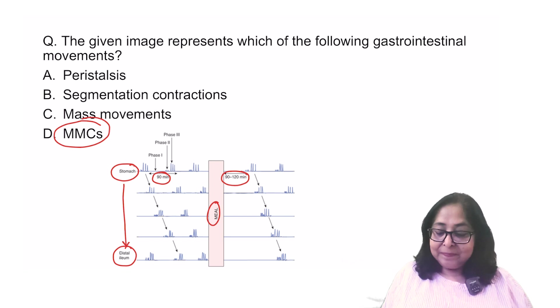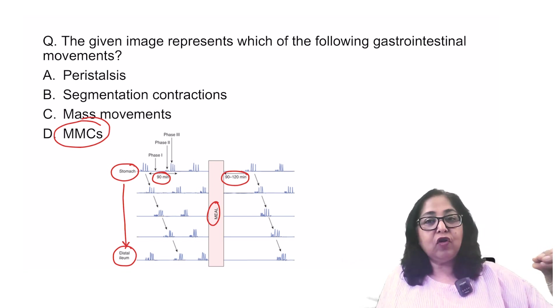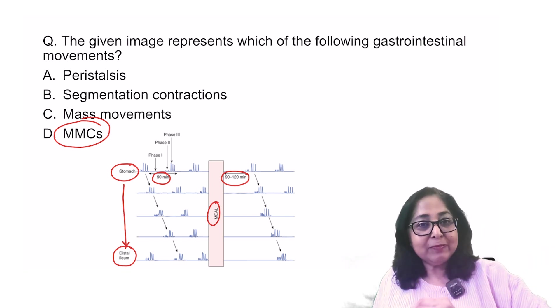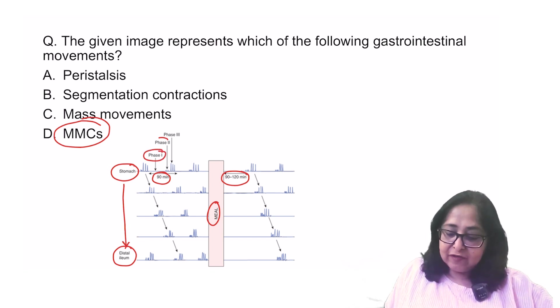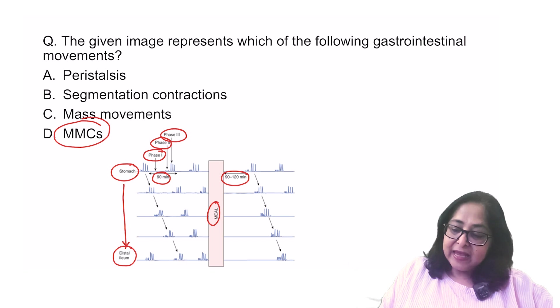These migrating motor complexes, they occur between meals in the inter-digestive period. The next important point, this is like a ring of contraction from the stomach right up to the distal ileum. This has got three phases. Phase 1, phase 2, phase 3. What is phase 1? Phase 1 is the quiescent phase.